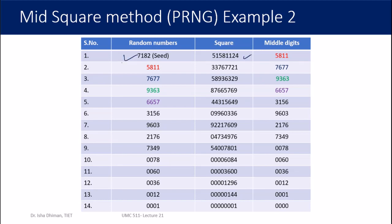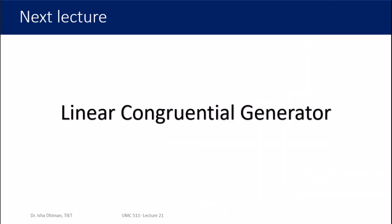Another example uses a four-digit seed: 7182. You square it and pick the middle four digits each time. Following the same process, in this example too you eventually get 0000 after about 14 iterations, giving you only 15 random numbers before everything becomes zero. This shows the method only works well when a small number of random numbers is required, but most applications need a very large number. In the next lecture we'll discuss the linear congruential generator, which addresses these limitations.